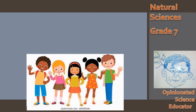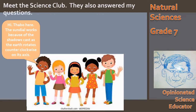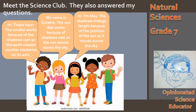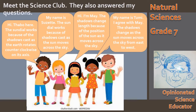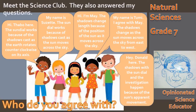I'd like to introduce you to the science club. They also answered my questions. Tabor thinks the sundial works because of the shadows cast as the earth rotates counterclockwise on its axis. Suzette thinks the sundial works because of shadows cast as the sun moves across the sky. May thinks the shadows change length because of the position of the sun as it moves across the sky. And Tumi agrees, thinking the shadows change as the sun moves across the sky from east to west. Donald says that the shadows with the sundial and the investigation happen because of the sun's apparent movement.